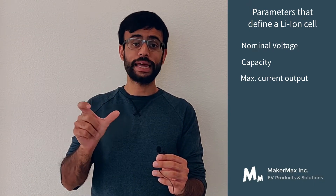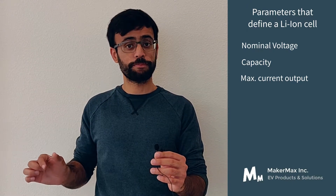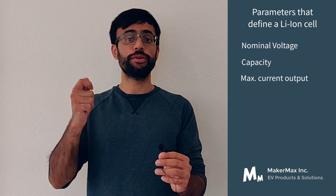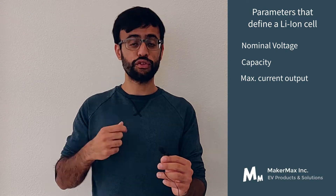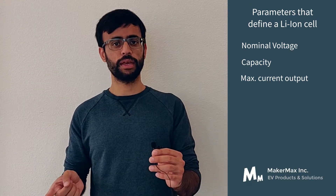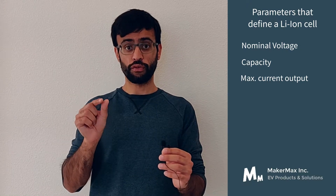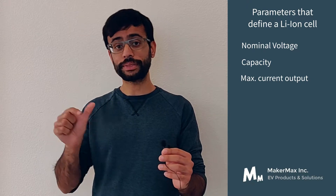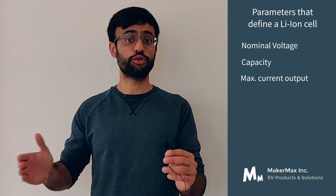There are two sub-parameters at play: maximum instantaneous current and maximum continuous current. When someone tells you the maximum current output of a cell is 4 amps, the first question you should ask is whether that is instantaneous or continuous. Four amps instantaneous means you can discharge the cell at 4 amps for a very short amount of time, while 4 amps continuous means it can deliver 4 amps for a larger amount of time, say 20 to 30 minutes.